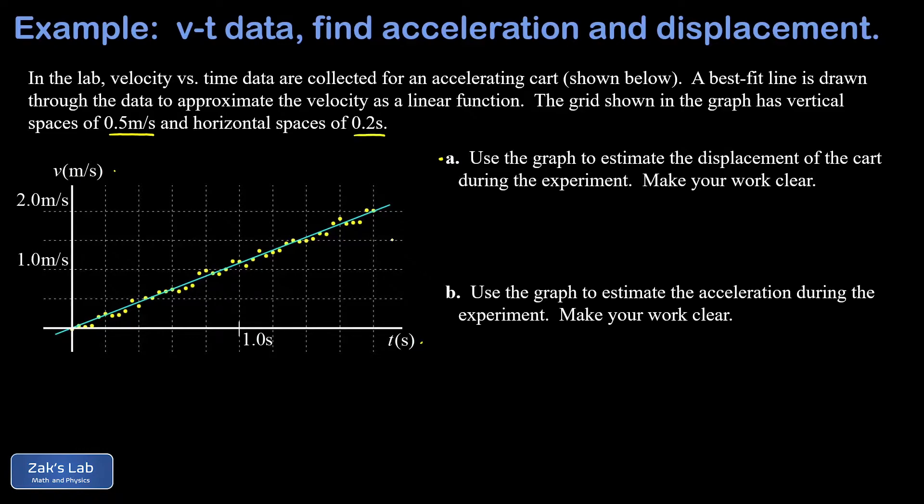We have to remember that the displacement is given by the area bounded by the v-t graph, and this best-fit line has given us a simple triangle for the area. The height of that triangle is 2.0 meters per second while the base of that triangle is 1.8 seconds.